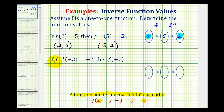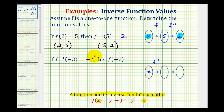Looking at our second example, we have f inverse of negative three equals negative two. We want to determine f of negative two. Negative three is the input into the inverse function when the output is negative two. Notice how now we're making negative two the input into f. Since these two functions undo each other, the final output will be negative three.